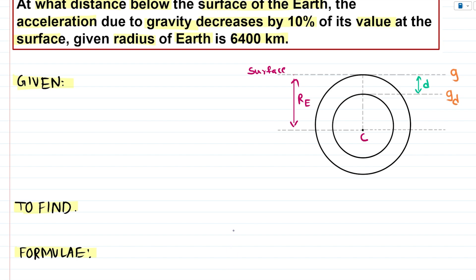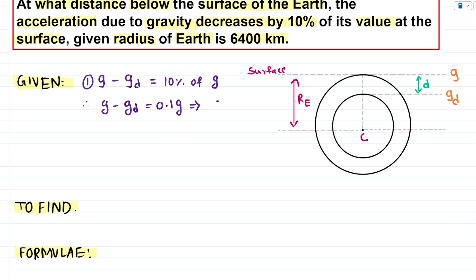As per the question, the decrease in the value of acceleration due to gravity means original value minus the recent value. So g minus gd equals 10% of its value at the surface: g minus gd equals 0.1g, because 10% is 0.1. Calculating further, gd equals 0.9g, and we get the ratio gd upon g as 0.9. This is our first given quantity.